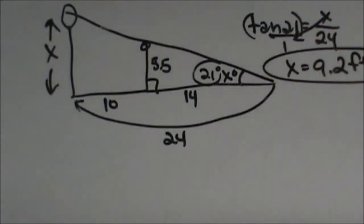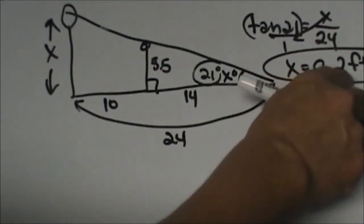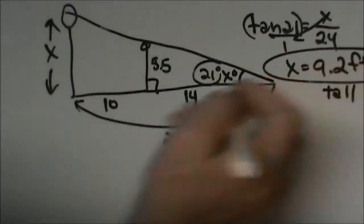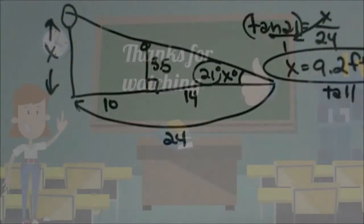And that is how you do it, so the light post is 9.2 feet tall. So that is number 7.